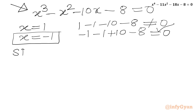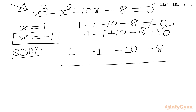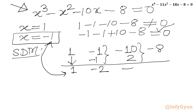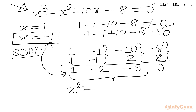Now I will use synthetic division method again. I need to write all the coefficients of the cubic equation: 1, -1, -10, and constant -8. Leading coefficient 1 is written as is. Multiply: -1 times 1 is -1; addition gives -2. Then -1 times -2 is 2; we add and get -8. Then -1 times -8 is +8; addition gives 0. So here we have the coefficients for the quadratic equation: x² - 2x - 8 = 0.